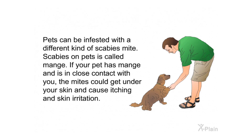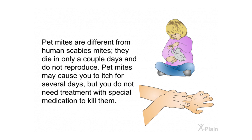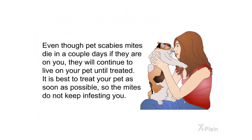Pets can be infested with a different kind of scabies mite. Scabies on pets is called mange. If your pet has mange and is in close contact with you, the mites could get under your skin and cause itching and skin irritation. Pet mites are different from human scabies mites — they die in only a couple of days and do not reproduce. Pet mites may cause you to itch for several days, but you do not need treatment with special medication to kill them. However, if they are on you they will continue to live on your pet until treated, so it is best to treat your pet as soon as possible.